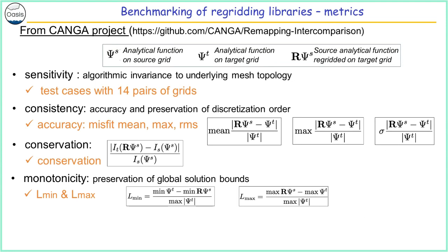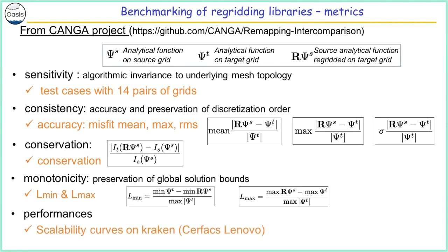Another criteria is conservation — the integral of coupling fields on the target grid minus the integral on the source grid, which tells you if your fluxes are globally conserved. The monotonicity metric is the preservation of the field maximum and minimum, given by the metrics Lmin and Lmax, which tell you if your remapping algorithm produces overshoot, undershoot, or smoothing. We also evaluate performance and I will show scalability curves.